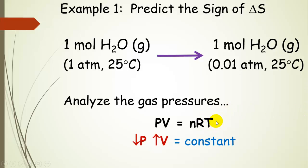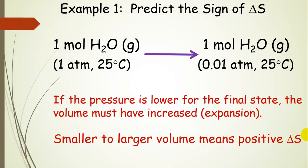We already said that the temperature was constant with the same number of moles of gas, and R, of course, is the gas constant, so this entire side is just a constant. So if we decrease the pressure, then the volume has to increase. And if the volume increased or the volume expanded, then we've gone from a smaller to a larger volume, and that means we have a positive delta S. So the larger volume is going to allow more possible positions or microstates for those water molecules in that volume.